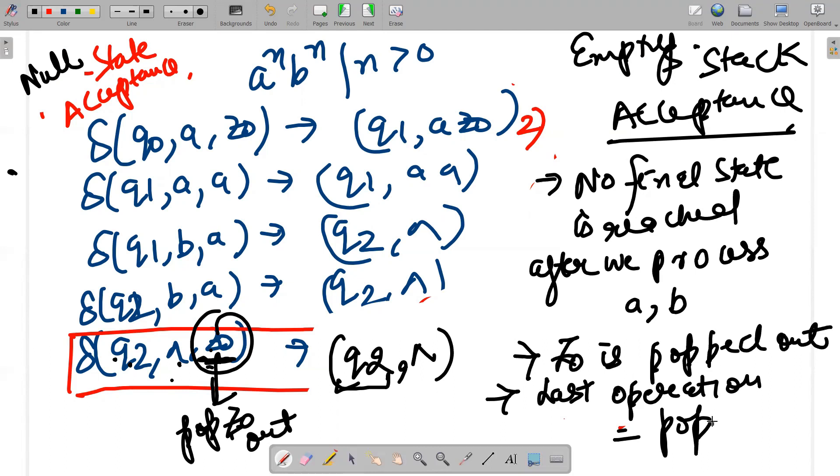So this is the only change. There are two types of acceptance: one is known as final state acceptance and one is known as null store acceptance.